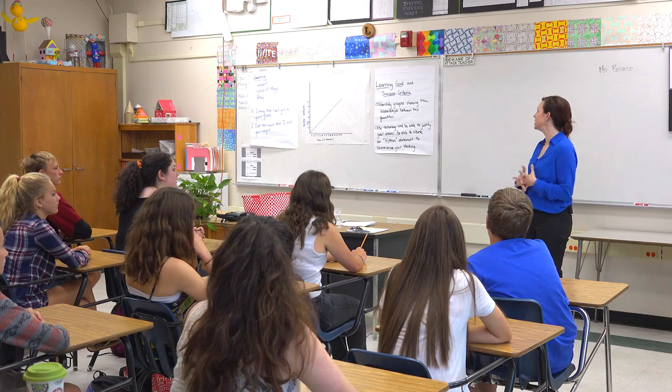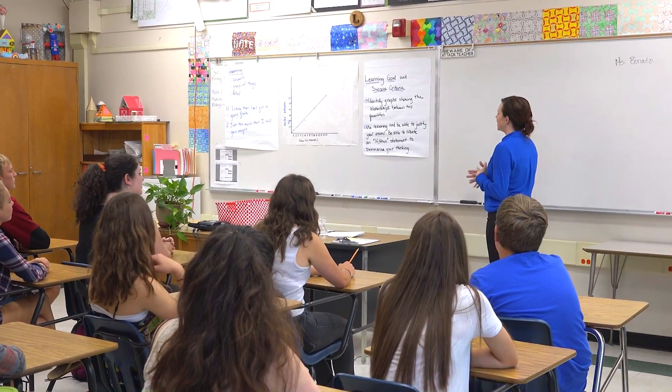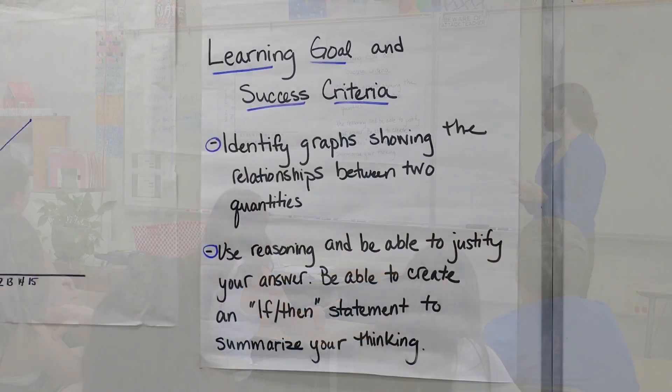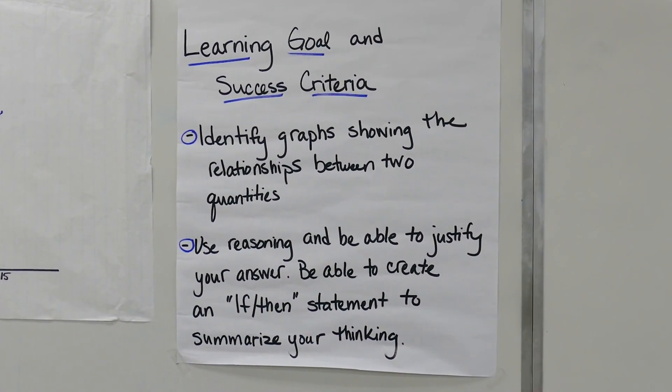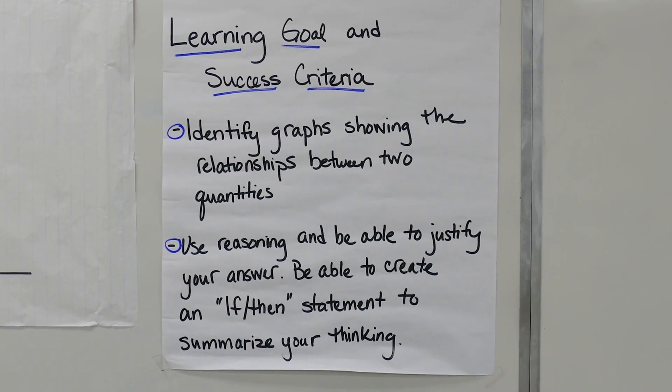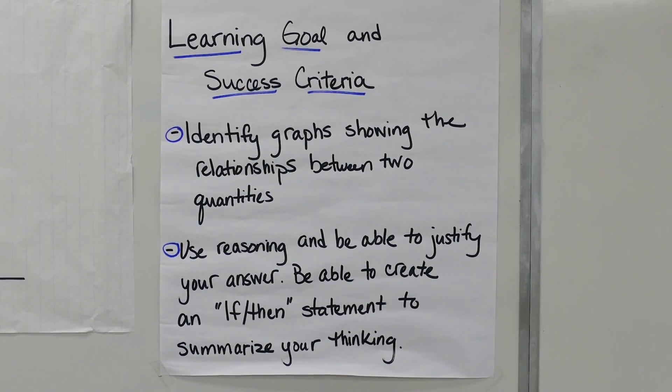Yesterday we started the lesson by introducing the learning goals and the success criteria. I shared with the class that they were going to be identifying graphs showing the relationship between two quantities, and then using reasoning be able to justify their answer. By the end of the lesson, I wanted them to be able to write an if-then statement clarifying their thinking in terms of relationships between two quantities.